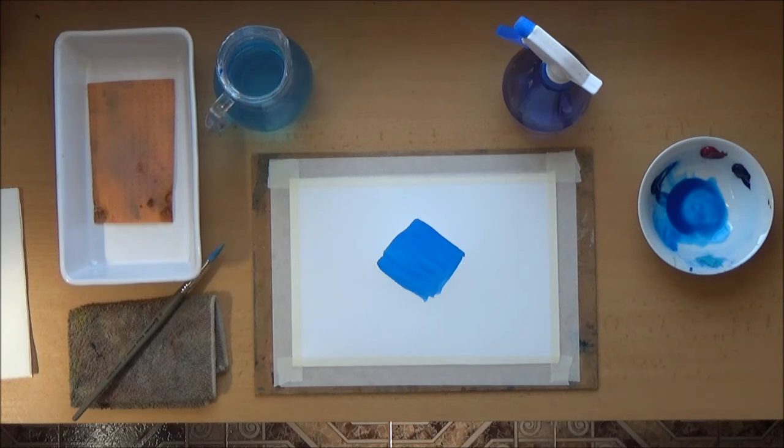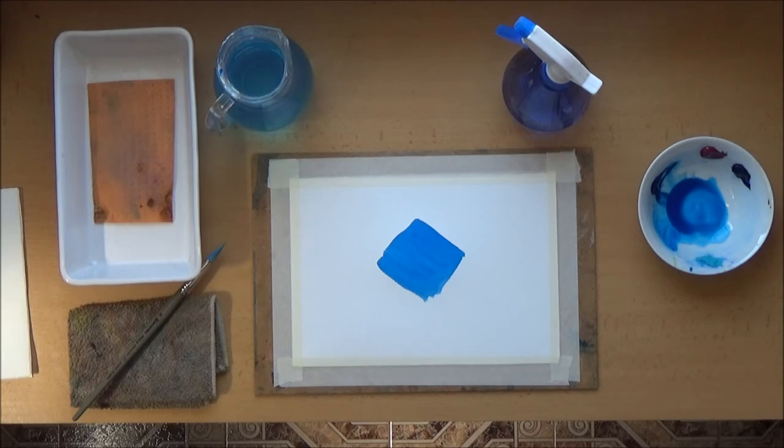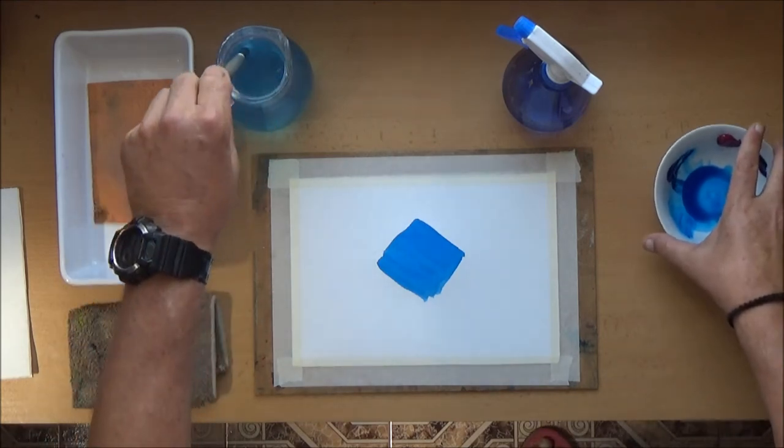The alternative, of course, is to use a hairdryer. You can dry this, but if you're using wet onto wet techniques, which I'll come to in a second, then it means that it'll stop the flow of colour interacting on the paper, which is one of the beauties of watercolour paint. I'll just set that to one side.